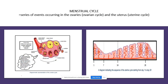The menstrual cycle refers to all the events taking place in the ovaries (the ovarian cycle) and the uterus (the uterine cycle) — usually about 28 days. Many Grade 12s make the mistake of thinking the menstrual cycle refers only to menstruation, but menstruation is just a small part of it. The menstrual cycle covers everything happening in both the ovaries and uterus.